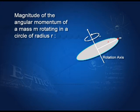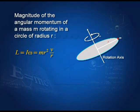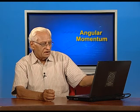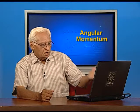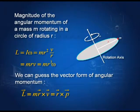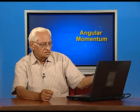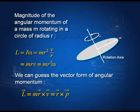The magnitude of the angular momentum of mass m rotating in a circle of radius r is L = Iω. Here I = mr² and ω = v/r, so it equals mrv, or mr²ω depending on which formula you prefer. From L = mrv, we can guess the vector form: L = m(r × v), which is the cross product of vectors r and v multiplied by m, or equivalently the cross product of r and p.